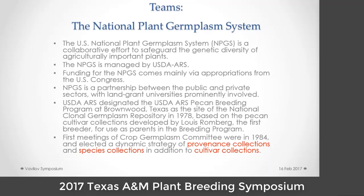The reason they did that is because Louis Romberg, the first pecan breeder, had amassed a collection of cultivars that he used in breeding. At the first meetings of the Crop Germplasm Committee in 1984, we had a multi-disciplinary group representing many people from across the United States working with pecan and USDA. Texas A&M was well represented. Georgia was represented, and Mexico was represented by Ruben Castro and Luis Aguirre. I was there from LSU pecan station.